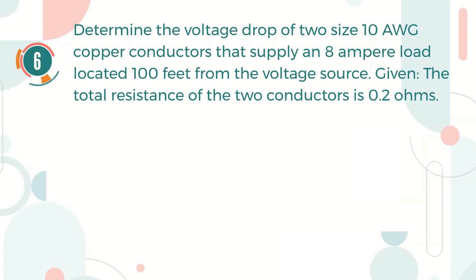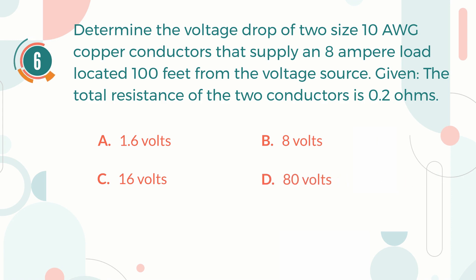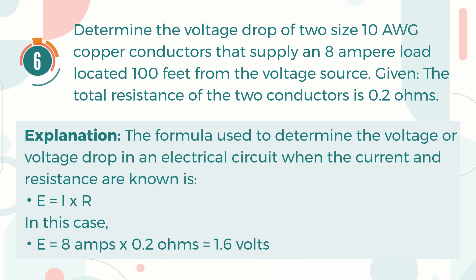Number six: Find the voltage drop of two size 10 AWG copper conductors that supply an 8 ampere load located 100 feet from the voltage source, given the total resistance of the two conductors is 0.2 ohms. A) 1.6 volts. The correct answer is A, 1.6 volts. The formula used to determine voltage drop when current and resistance are known is: voltage equals current multiplied by resistance. In this case, voltage equals 8 amperes multiplied by 0.2 ohms, which equals 1.6 volts.